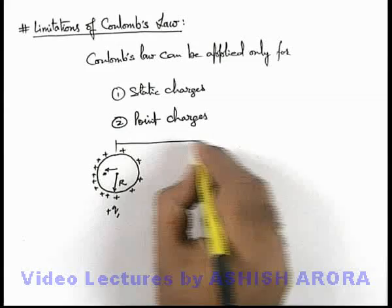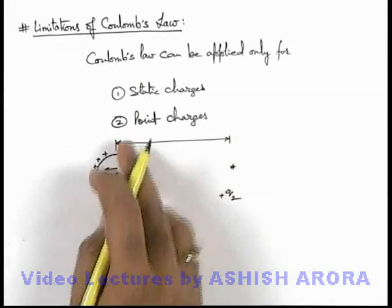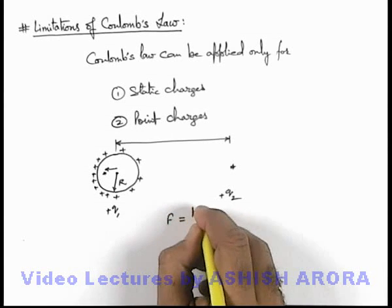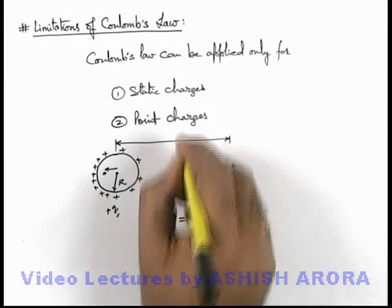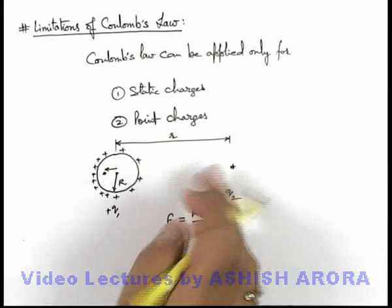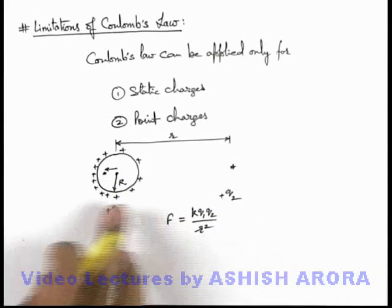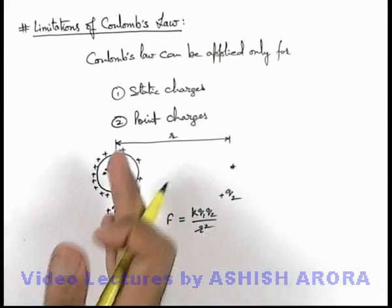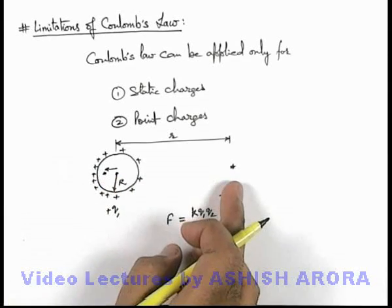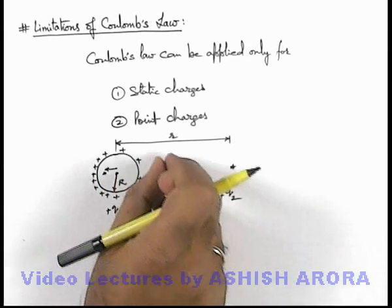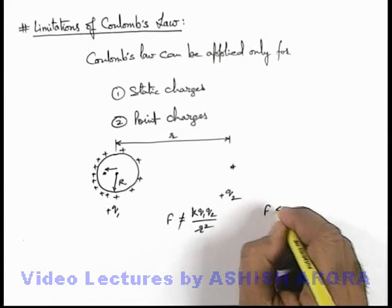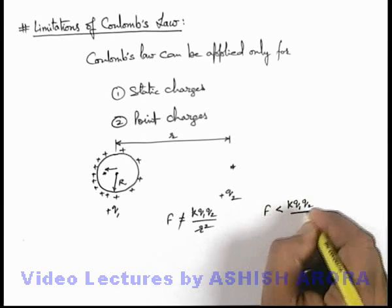Now if we talk about the separation between q1 and q2, and if we consider q1 at the center, then the force between the two can be written as k·q1·q2 / r², where small r is the separation between q1 and q2 — actually the separation between q2 and the center of the sphere. But as we have placed charge plus q2, the overall charge is distributed slightly away from it. Due to this, the force between the two will be relatively less because the effective separation is increased. So this formula won't be true in this situation — actually the force will be less than k·q1·q2 / r².